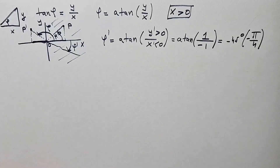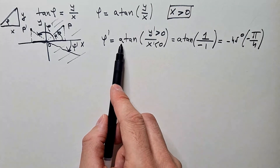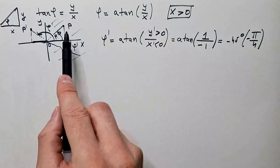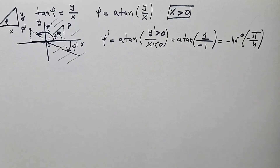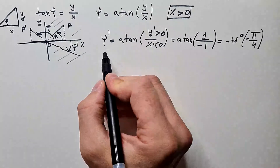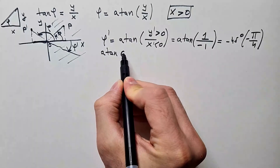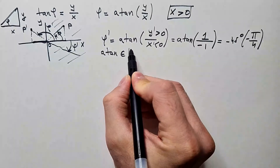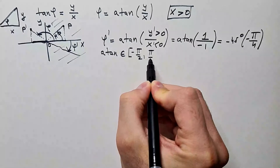This is where the idea of arctangent 2 comes into play. We want to extend the domain of the arctangent function beyond the first and fourth quadrant. Formally, we say that the arctangent function is defined in the interval from minus pi over 2 to pi over 2.